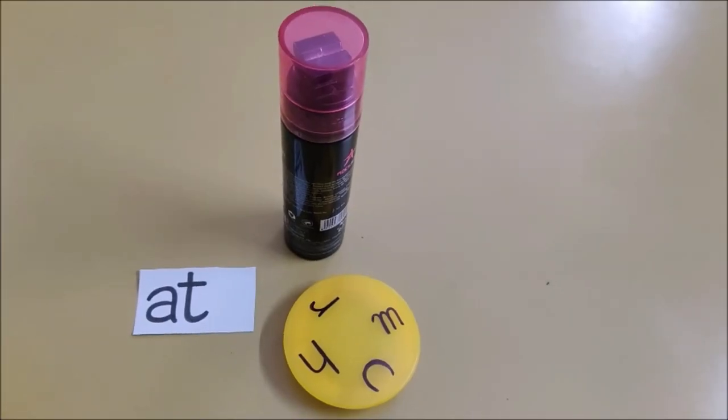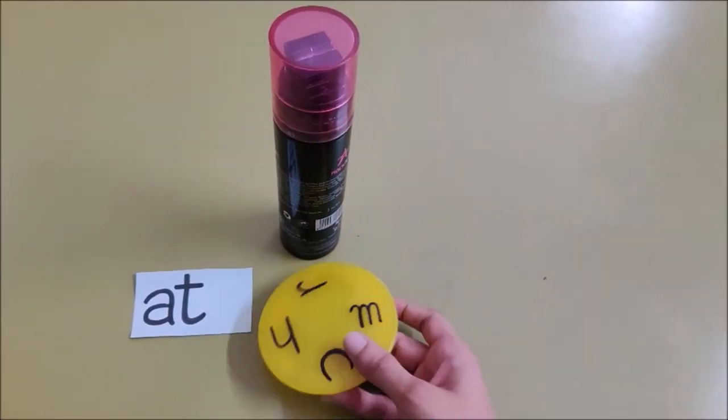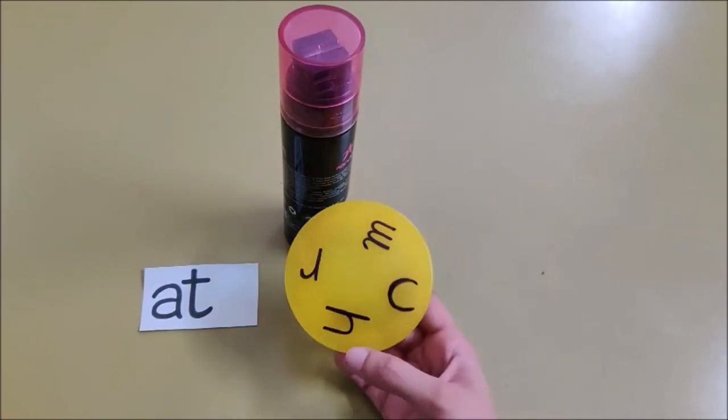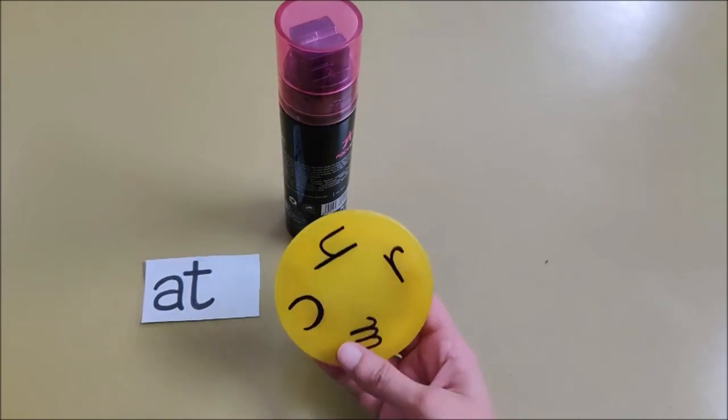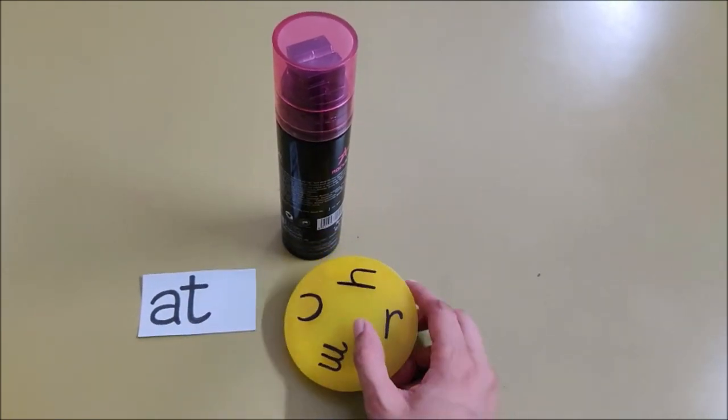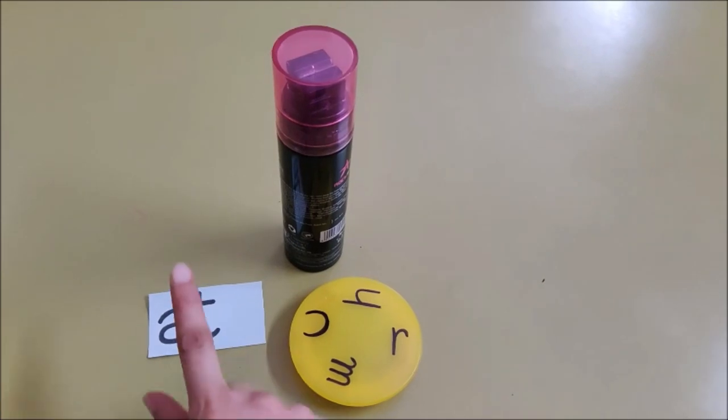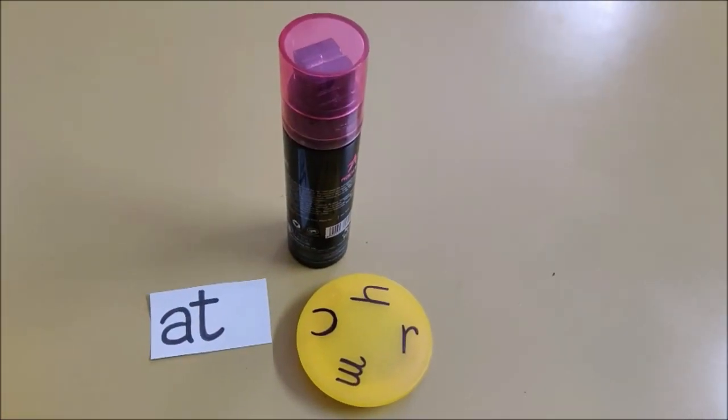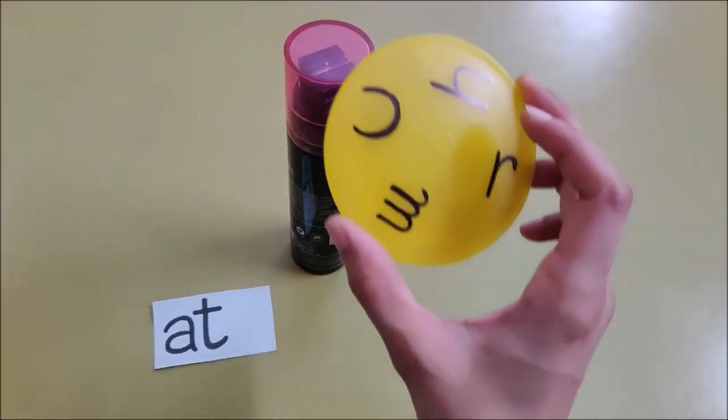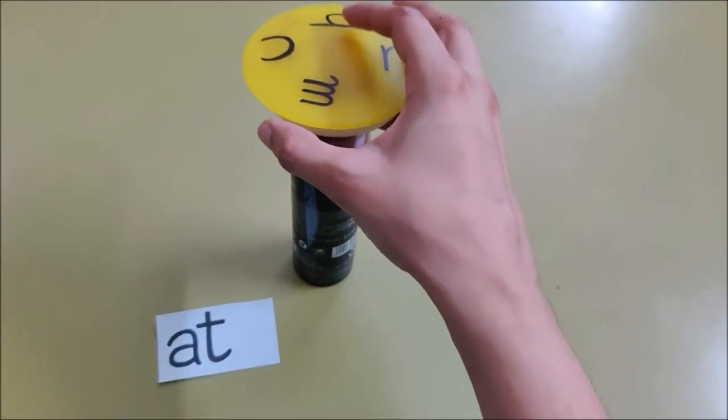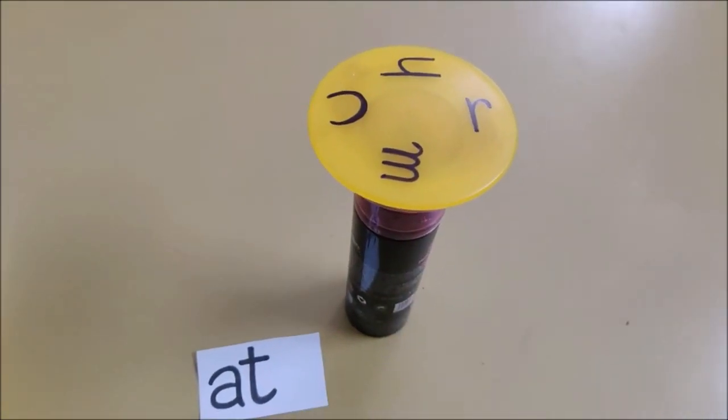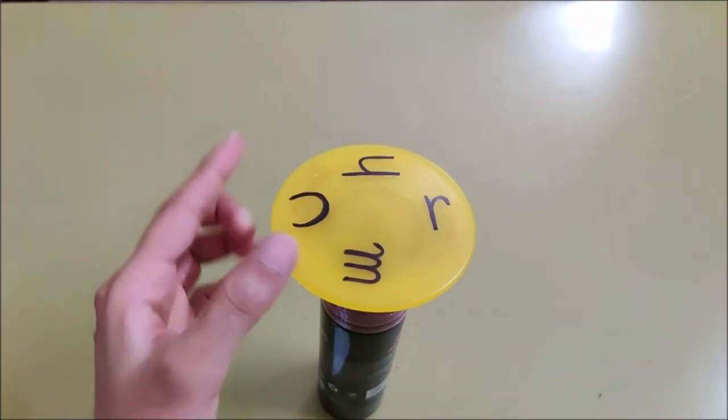Now it is time for a reading activity. For this game, you need a lid, and on this lid I have written all the letters as you can see. And you need a flash card and a perfume bottle or a glass. Now let us see how to play this game. I am keeping this lid on top of the perfume bottle. Now I am going to spin it.